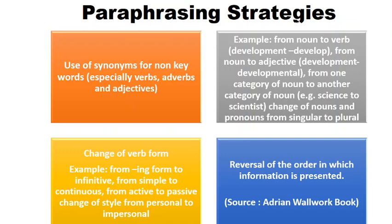You can change the verb form — for example, from the -ing form to the infinitive form, from simple to continuous. Very importantly, you can write the entire sentence from active voice to passive voice, and similarly change from personal to impersonal. You may also reverse the order in which the information is presented — that is, entirely restructure the order. The essence is simple: without disturbing the original meaning, you have to write the same thing in new words. That's exactly what paraphrasing is. If you apply all these strategies, you will be able to paraphrase effectively.